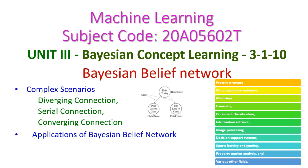In this machine learning class, we will see the complex scenarios and the applications of Bayesian belief network, which comes under the third unit: Bayesian concept loading. When we come to complex scenarios, there are three different scenarios: diverging connection, serial connection, and converging connection. These are the applications of Bayesian belief network. Let us see all those things one by one in today's class.